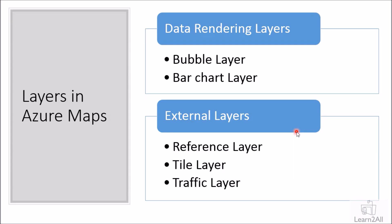Now let me talk about the different available layers for Azure Maps. When you add Azure Maps, there are two types of layers: data rendering layers and external layers. Data rendering layers include the bubble layer and bar chart layer. Under external layers we have three: reference layer, tile layer, and traffic layer. We are going to talk about each individual layer in detail during this session.